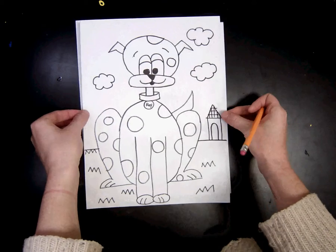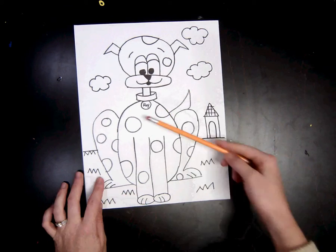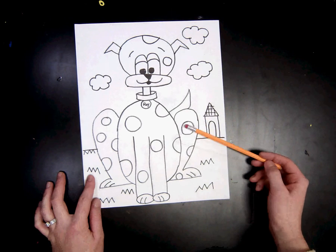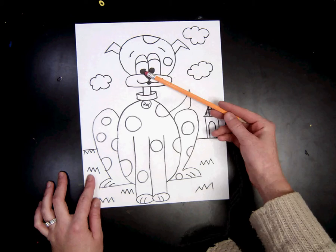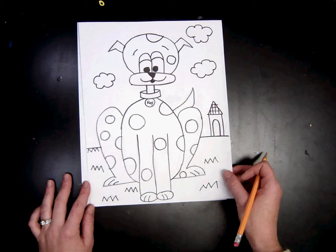Today we're going to be drawing a cartoon dog. We're going to start with some basic circles and ovals for the head and the body, and then we're going to go in and add more details like legs, tail, eyes, spots if you want, so it looks more like a dog.